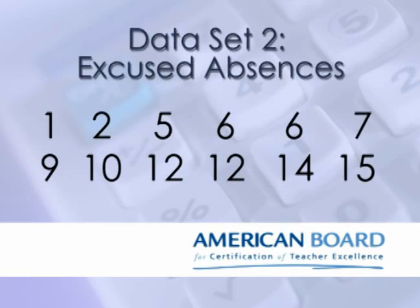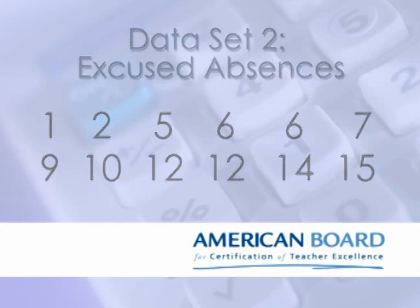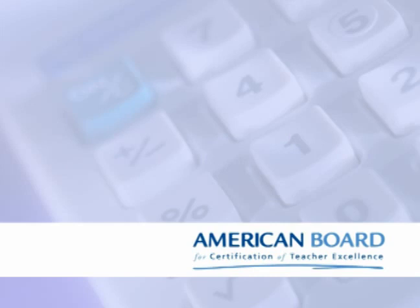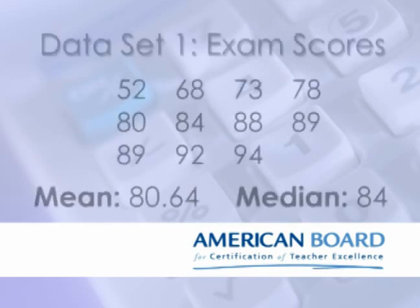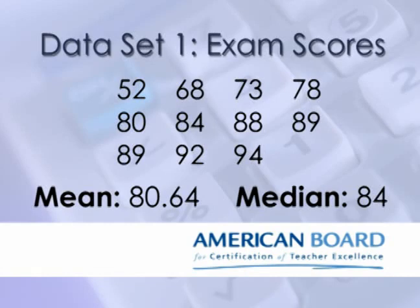Not only are we measuring the number of excused absences students have, we're also actually determining who is and isn't involved in after school sports. In this case, the mode was useful because it showed some sort of division between our students that might actually affect achievement as well. But enough about the mode — let's go back for a moment to the mean and the median of the test scores example. The average of the test scores was approximately 80.6, but the median was 84. Sure, those numbers aren't terribly different, but which better describes how the class did? We see that one of the test scores is significantly lower than the others: 52. If this 52 were even lower, it wouldn't change the median; however, it would change the mean.